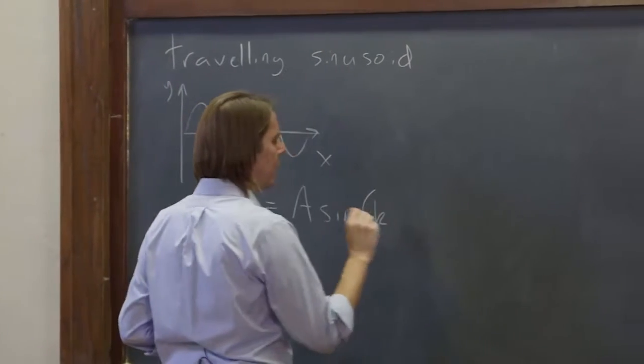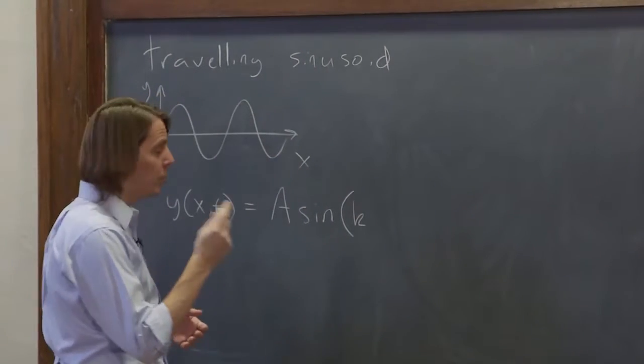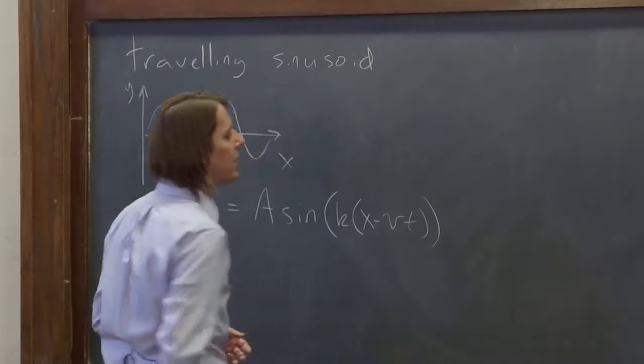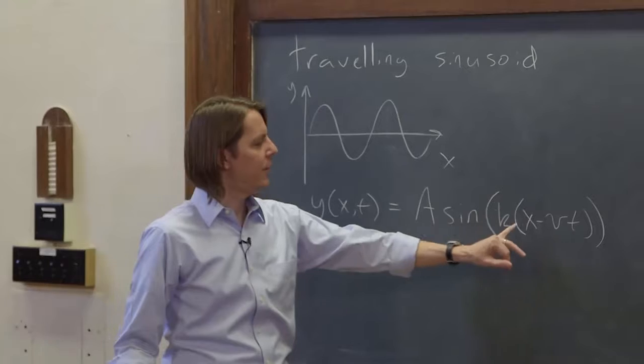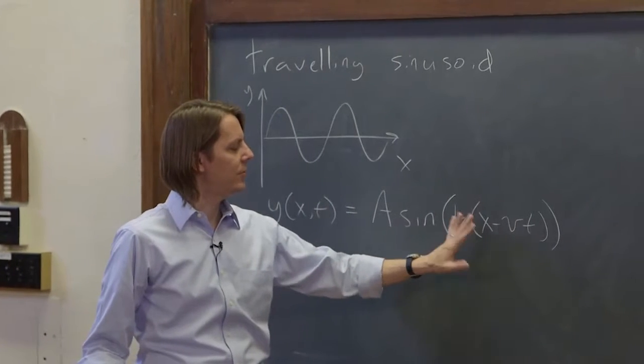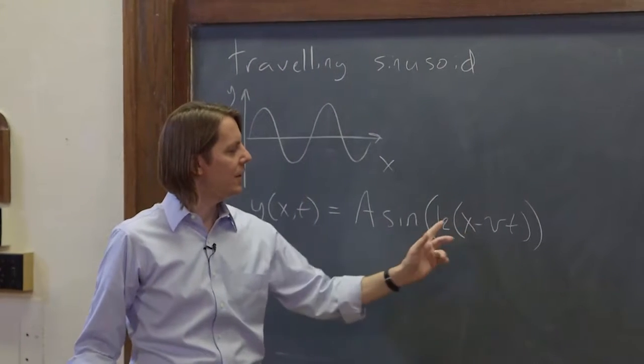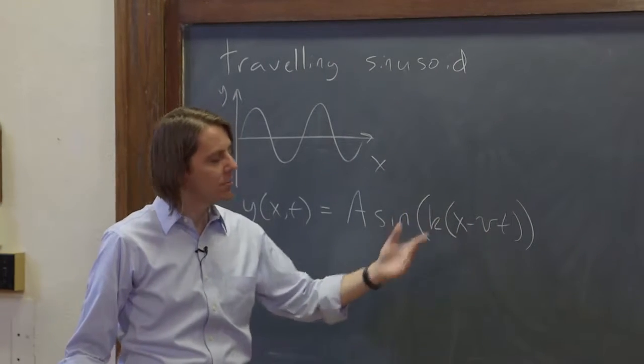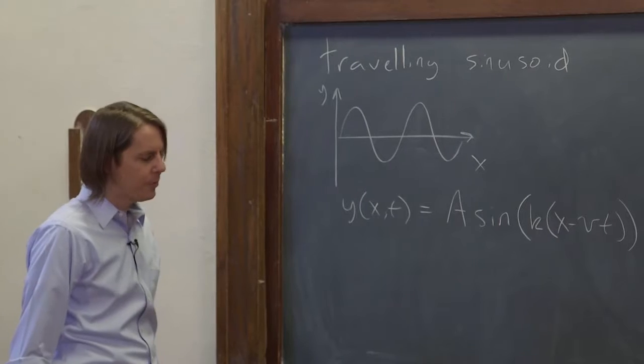So we would write it as k. Remember, that's the wave number, x minus vt. And that keeps everything fine. This is in meters, this is inverse meters, so that's unitless. That's a phase. And this is phase per meter. And velocity times time is meter, so it turns into phase. So everything works out.